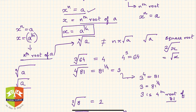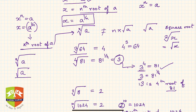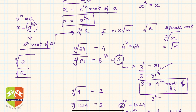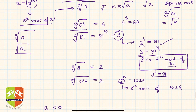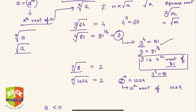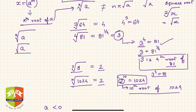The fourth root of 81: what value, when raised to power 4, gives 81? That value is simply 3, because 3 to the power 4 equals 81. So the fourth root of 81 is 3. Similarly, the third root of 8 is 2, and the 10th root of 1024 is also 2, because 2 to the power 10 equals 1024.